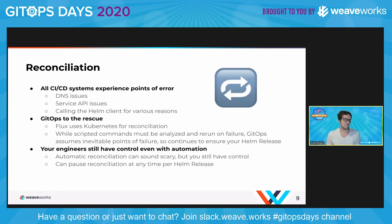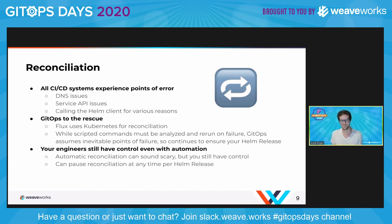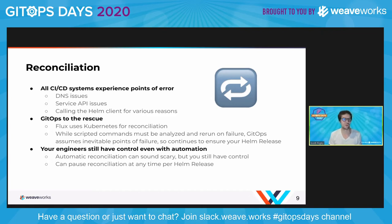This happens routinely with normal CI/CD systems — there are going to be errors. Whether it's a DNS issue, a service API issue — things like when GitHub's API has issues, or when CircleCI's API has issues — when there's some sort of error somewhere in the chain, this happens. There are also sometimes race conditions, depending on how your CI is set up, where you're trying to call the Helm client and it's not necessarily called the way you need it to be. GitOps really helps this by using Kubernetes for reconciliation.